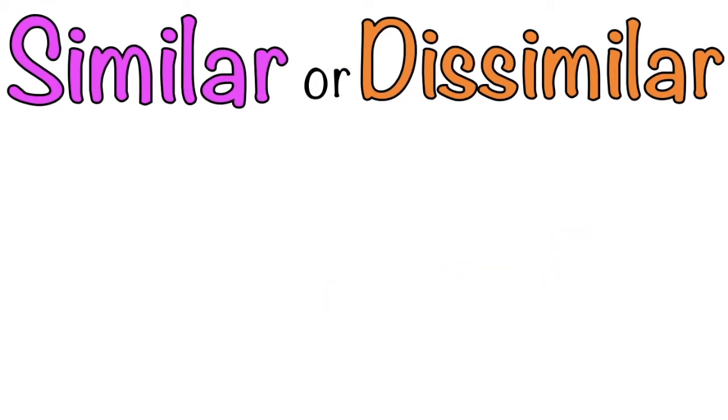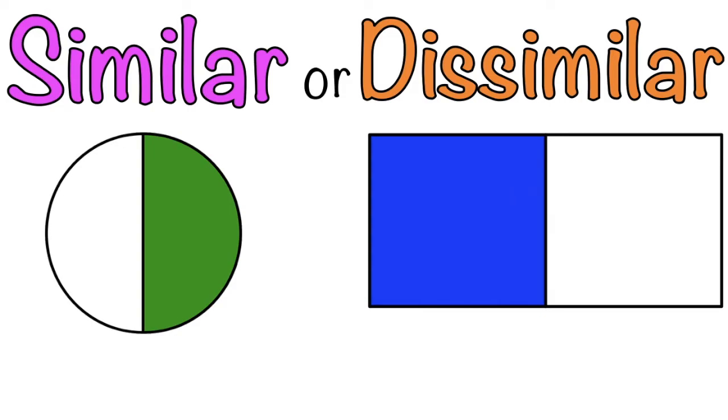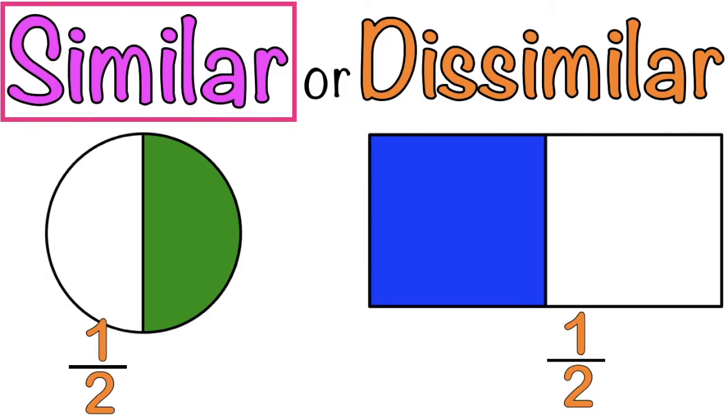Let's find out if the set of fractions is similar or dissimilar fractions. Let's have the first example. The first one is 1 half and the second one is 1 half. Is it similar or dissimilar? That's correct! It is similar fractions since their denominators are the same.